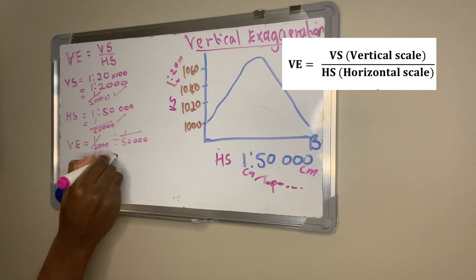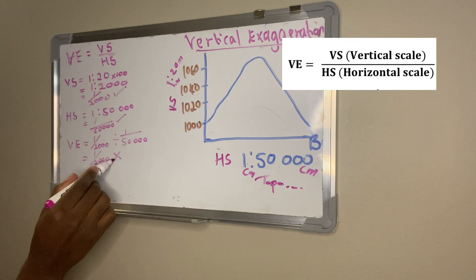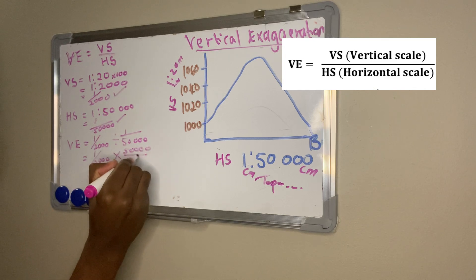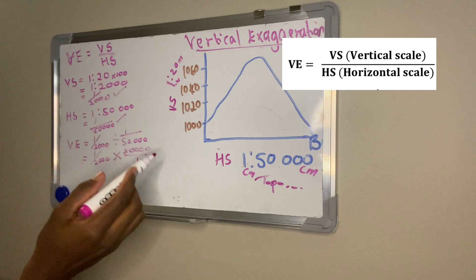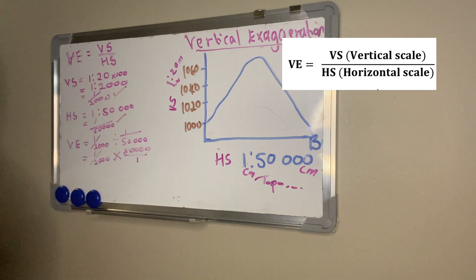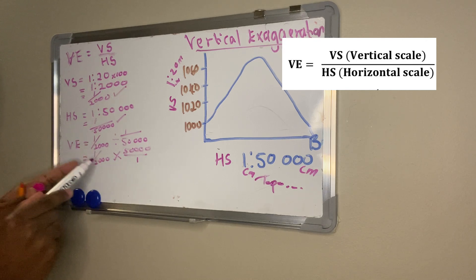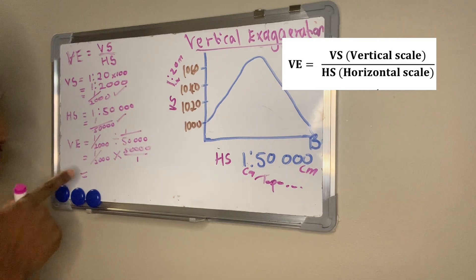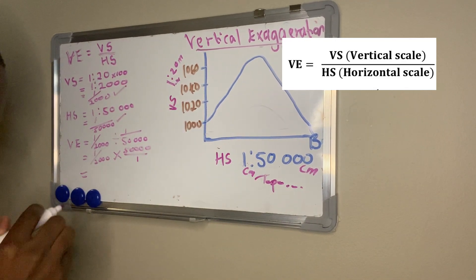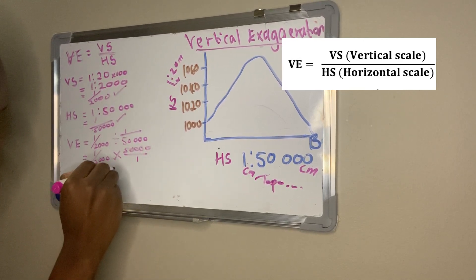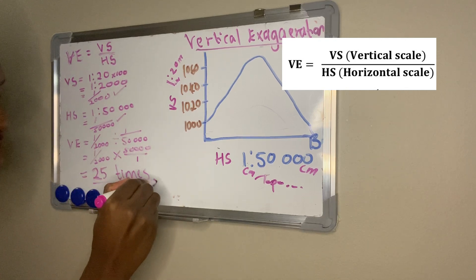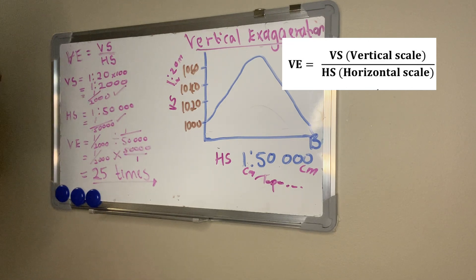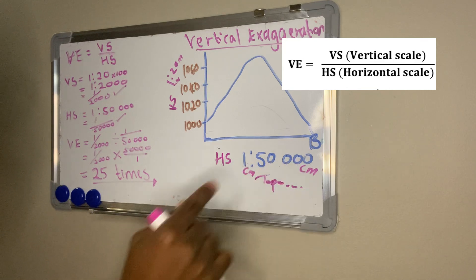Change the division sign into a multiplication sign — and when you do this, you invert the right-hand fraction: 1 over 50,000 becomes 50,000 over 1. The left side — 1 over 2,000 — remains as it is. Punch into your calculator: 1 over 2,000 times 50,000 over 1. The answer is 25. But don't just write 25 — write 25 times, because we are calculating how many times it was exaggerated.